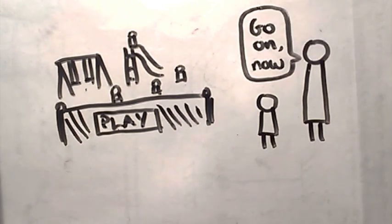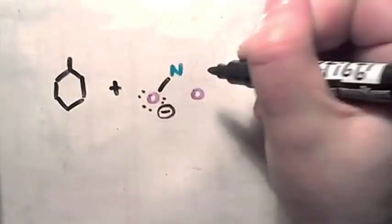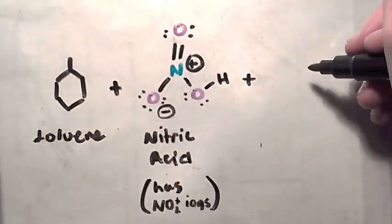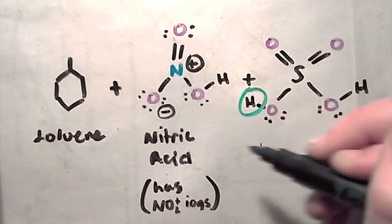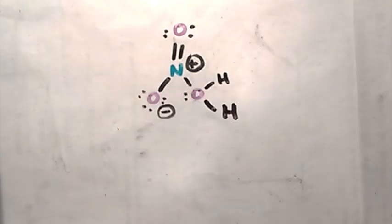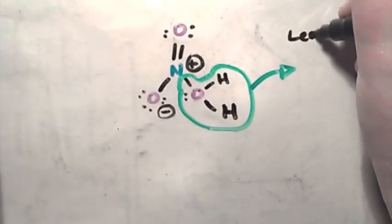In this case, we're going to react toluene with nitric acid to provide the nitronium and sulfuric acid to get the nitric acid to share. Sulfuric acid lends nitric acid a proton, or positively charged hydrogen ion, so that the nitric acid can get rid of H2O, or water, as a leaving group.